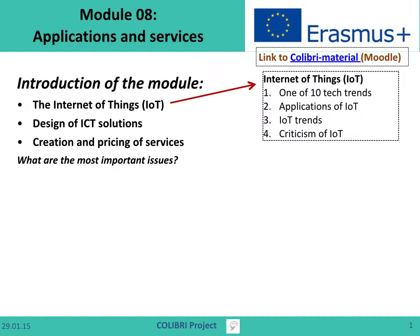It can be in automobiles, it can be in healthcare, it can be in almost any kind of issues. We start by looking at the Gartner Group, which identifies 10 technical trends for 2015. One of these is named as the Internet of Things, but it's also covered by several other items. We might say that 4 or 5 of the 10 technical trends identified for 2015 are related directly or indirectly to the Internet of Things.